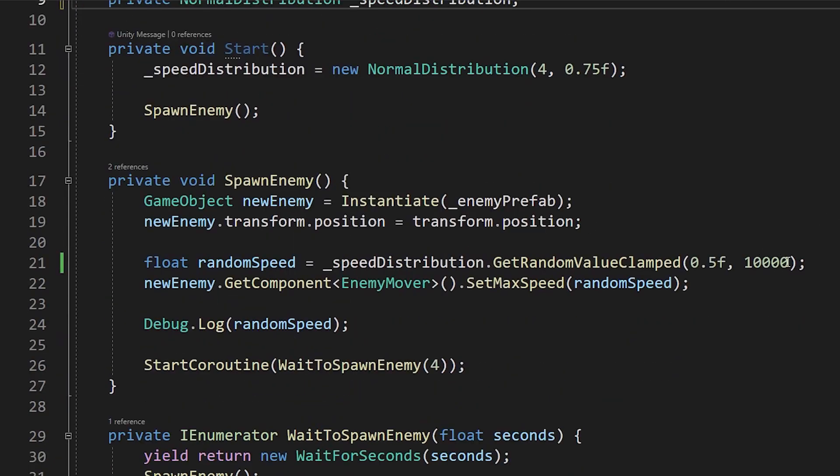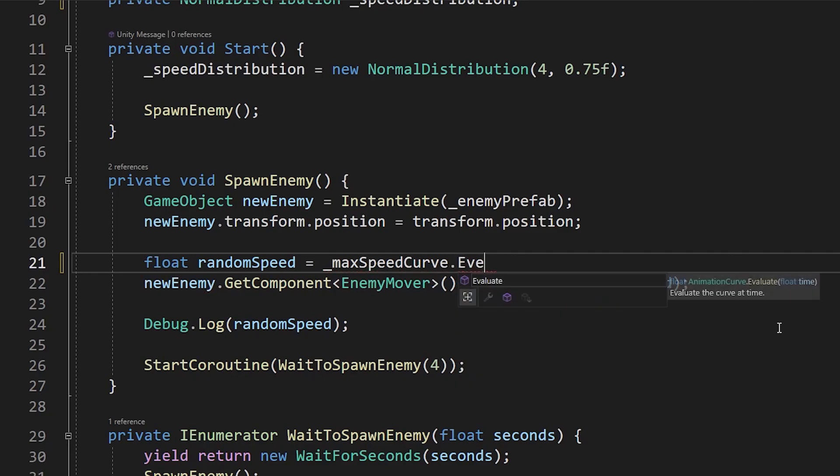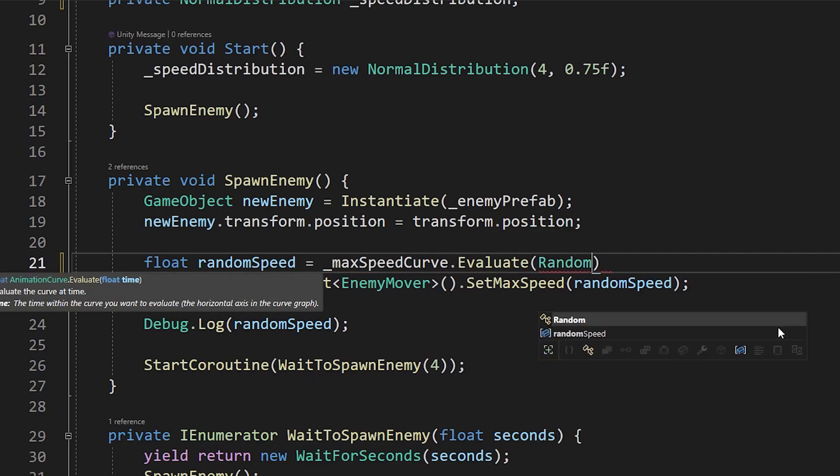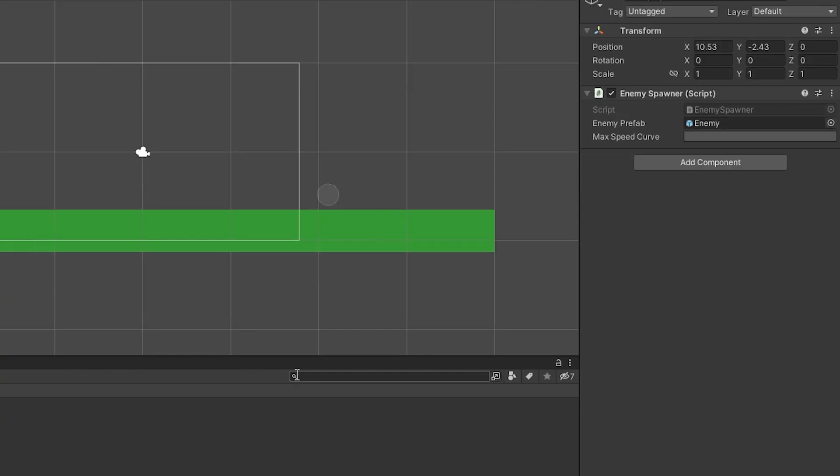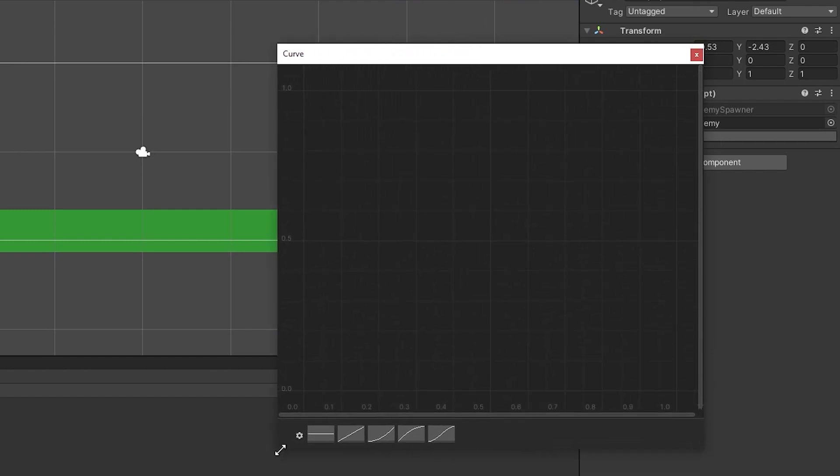Now, we will go down to where we get our random speed and set it to our max speed curve dot evaluate, and then pass in random dot value to get a number between zero and one. Now, it's time to actually make our distribution. So, hop back into Unity and click on the spot for our animation curve, and draw your quantile function. To edit the points directly, right click and type in the x coordinate, which is time, and the y coordinate, which is the value.